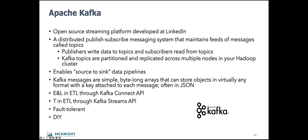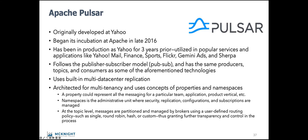Apache Kafka — this is the one everybody knows about, but there are others. It's an open source streaming platform developed at LinkedIn. A distributed pub-sub messaging system that maintains feeds of messages called topics. Publishers write data to topics and subscribers read from topics — that's where you get the source-to-sink data pipeline language. Kafka messages are simple. You can put in a transformation through the Kafka Streams API — it's kind of hard, but you can. There's also Pulsar, Nats, Red Panda, and a few others. Pulsar ensures message data is never lost under any circumstance — it achieves this with Apache BookKeeper to provide low latency, persistent storage.